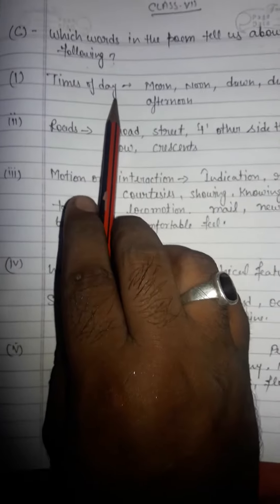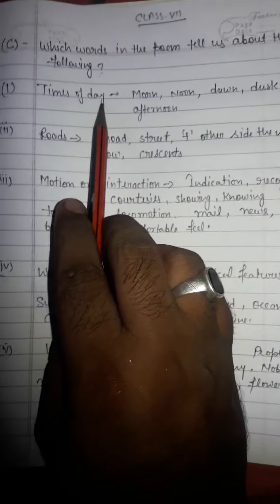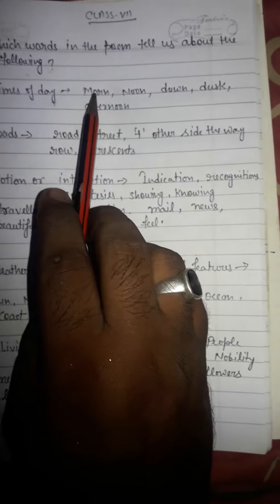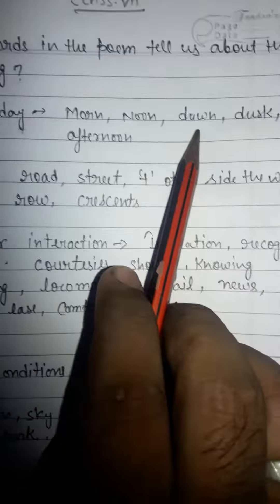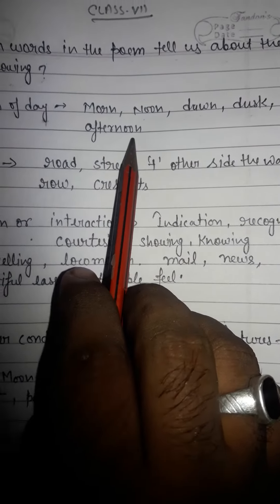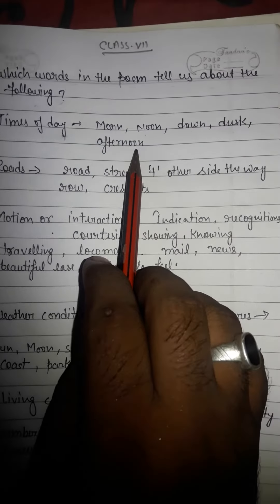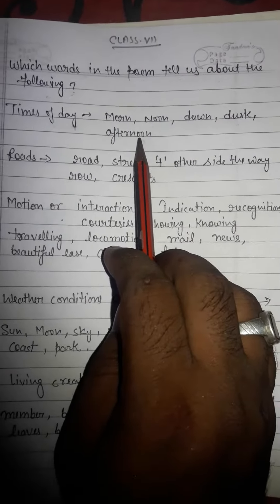First question, number C: which word in the poem tells us about the following? First of all, time of day. You have seen in the poem — when you read the poem, you will get to know that maximum times the time of day is mentioned, like morning, noon, dawn, dusk, and afternoon. These things are mentioned in the poem.